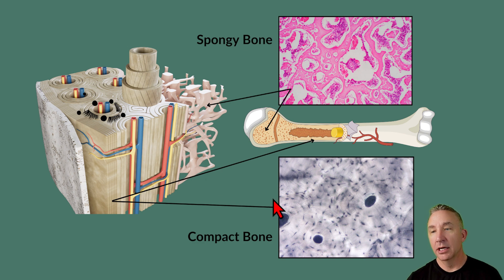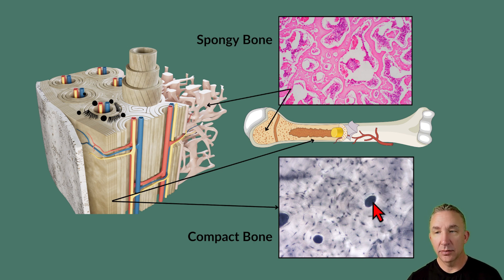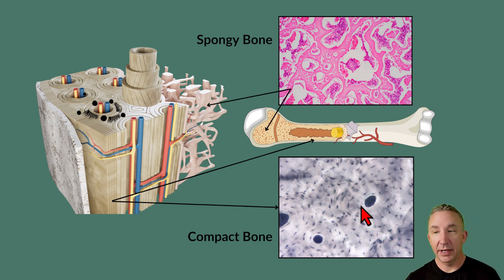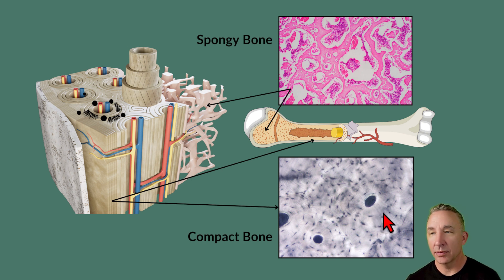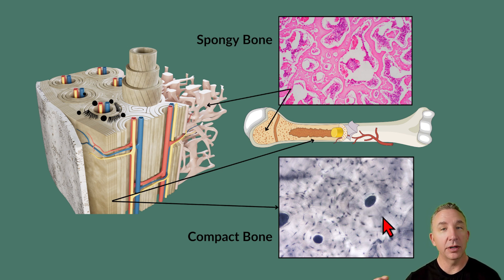Looking at the slide, that dark dot in the center is the central canal, indicating one osteon. An osteon is a circle within a circle within a circle — hard to see at this magnification, but it looks like a tree trunk or a dartboard. The dark dots circling around are osteocytes in the lacunae, connected by faint lines that look like eyelashes or sun rays — those are the canaliculi. These circles are the concentric lamellae. Put all these osteons together and you get compact bone.